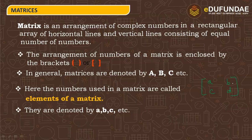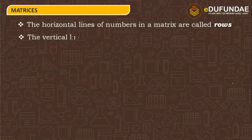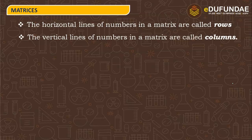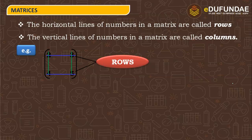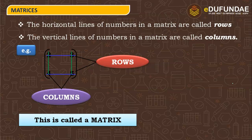What is a matrix? The horizontal lines of numbers in a matrix are called rows, and the vertical lines of numbers in a matrix are called columns. For example, a 2×2 matrix has elements 2, 3 in the 1st row and 4, 5 in the 2nd row — the horizontal lines represent rows and the vertical lines represent columns. This is called a matrix.